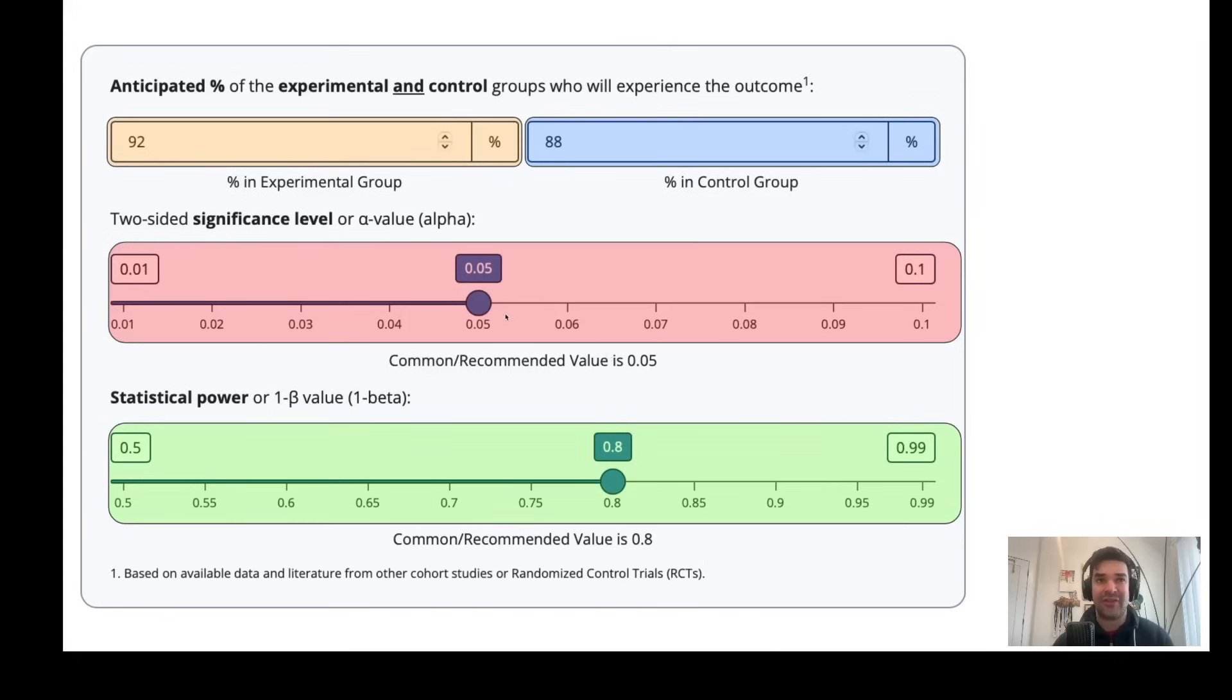Power - the default is 0.05, but using powercalc.ca, you can change it to your liking. And then statistical power, the default is 0.8, but you can change that accordingly, especially if you want more statistical power. But if you want more power, that means a much larger sample size is required.